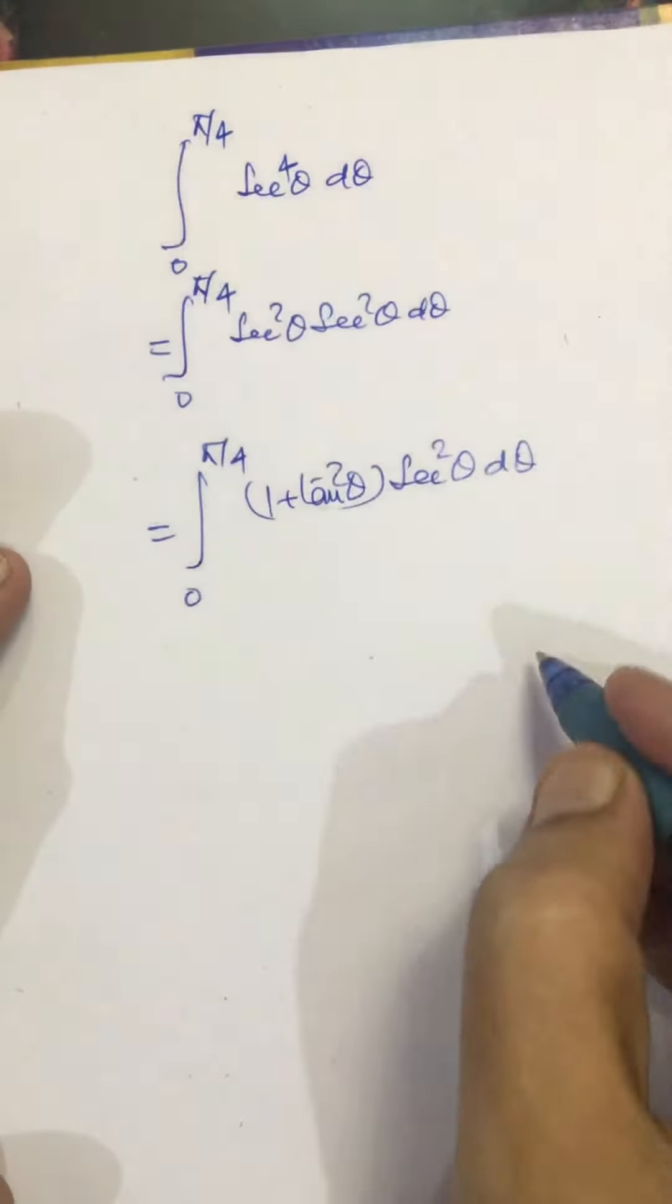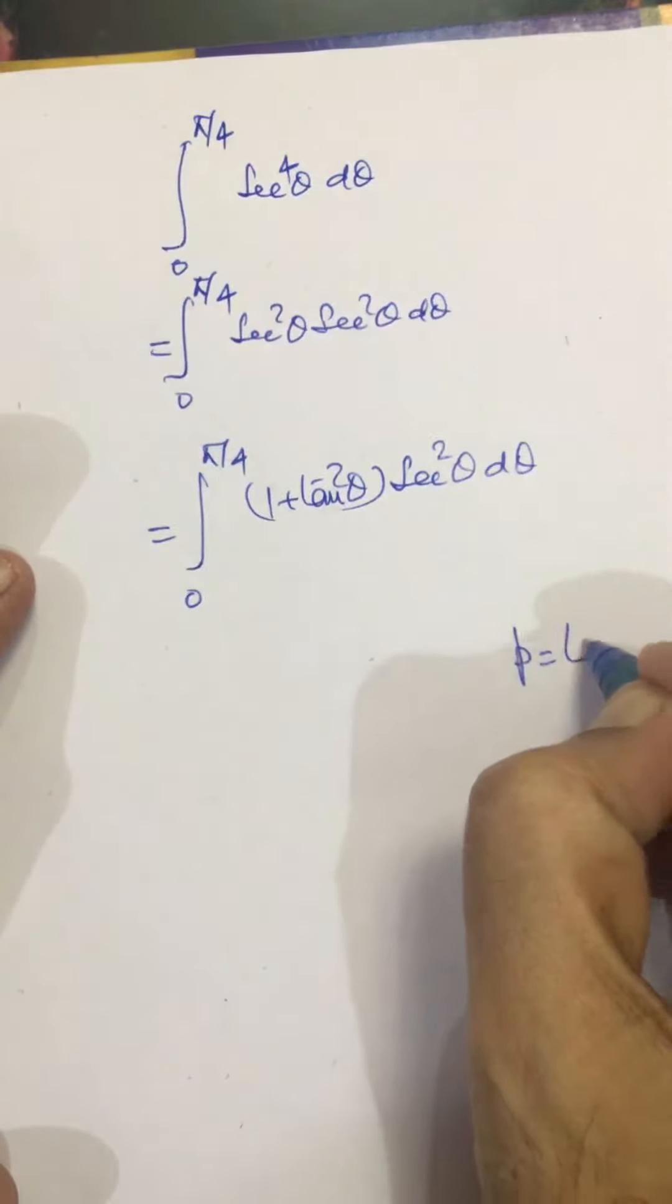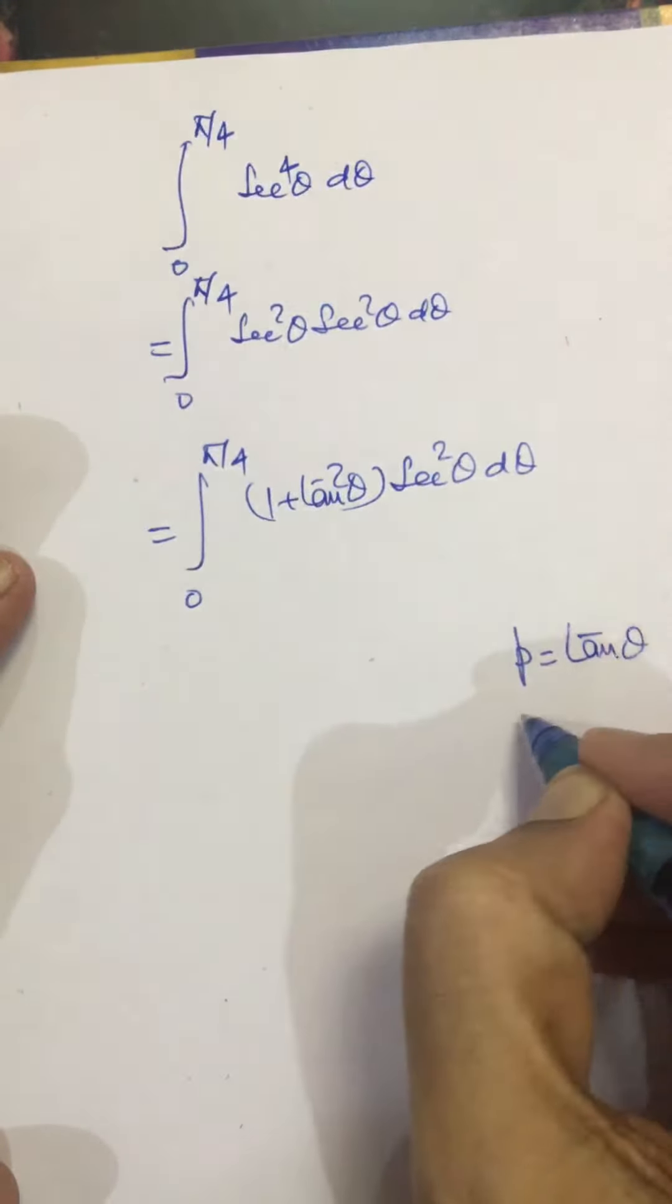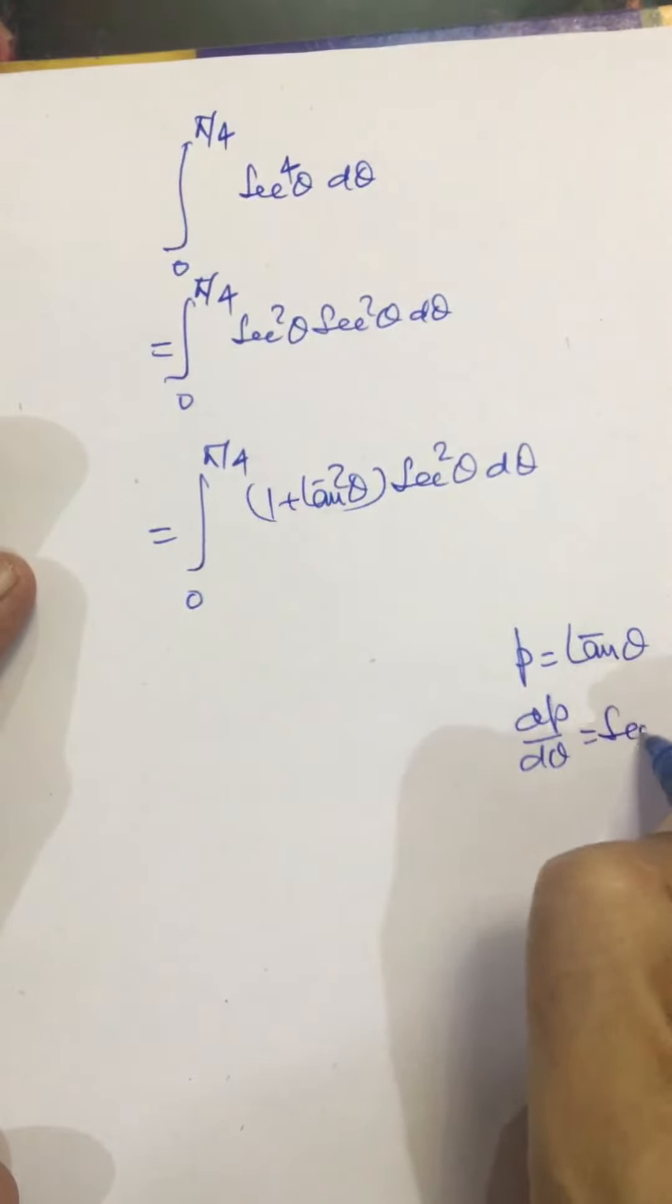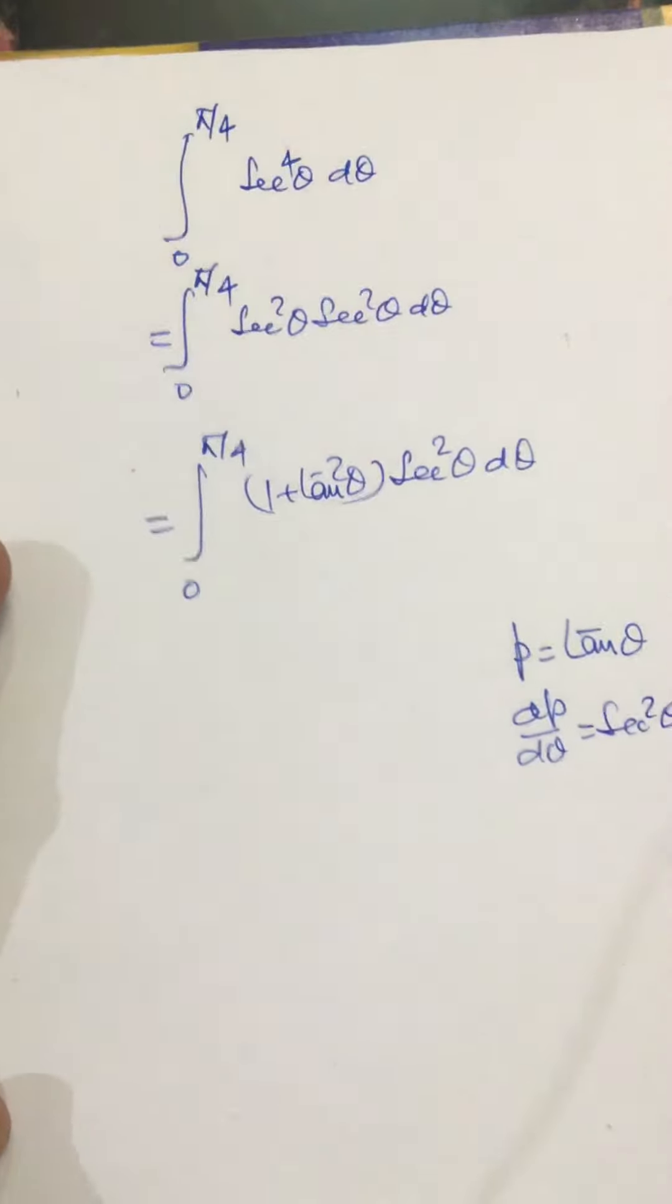Now, we put p is equal to tan theta, then dp upon d theta equals sec square theta.